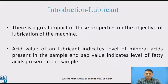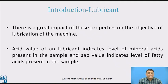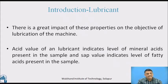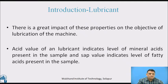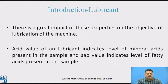There is a great impact of these properties on the objective of lubrication of the machine. Acid value of a lubricant indicates the level of mineral acids present in the sample, and saponification value indicates the level of fatty acids present in the sample. The source of lubricant in nature is either animal oil, vegetable oil, or mineral oil, so there is a greater possibility of mineral acids or fatty acids being present in a given sample of lubricant.